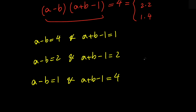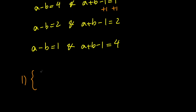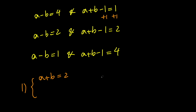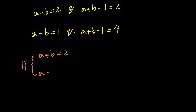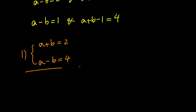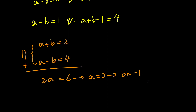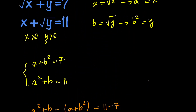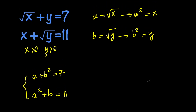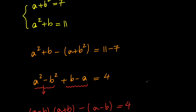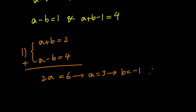In the first case, if we add one to both sides we get a plus b equals 2, and we know a minus b is 4. Adding these two gives 2a equals 6, which means a equals 3 and b equals negative 1. But remember that a and b are positive as well, so b cannot be negative, and therefore this is not a valid solution.